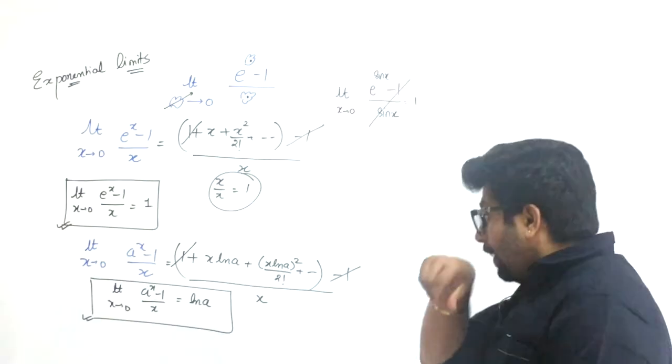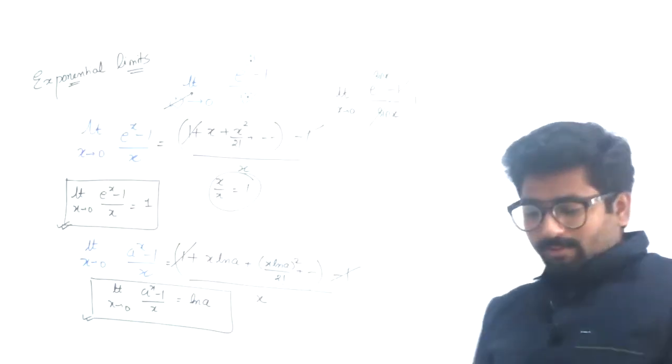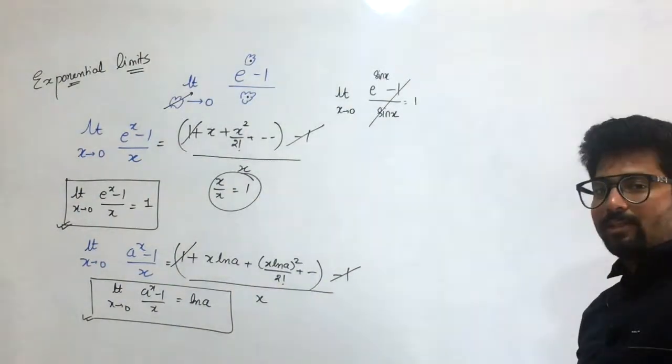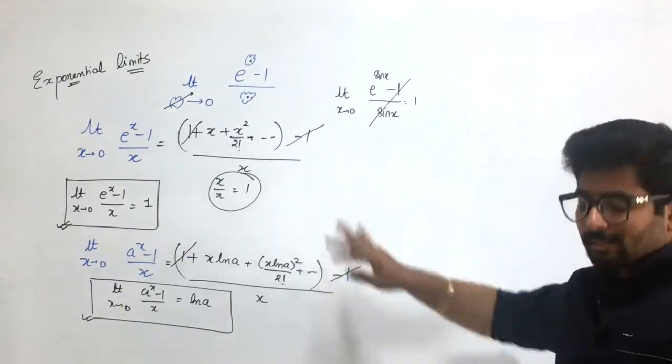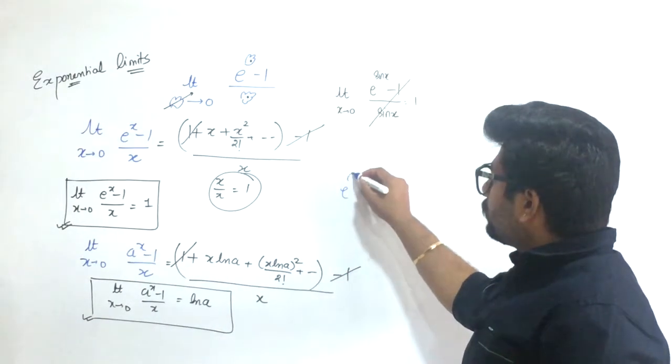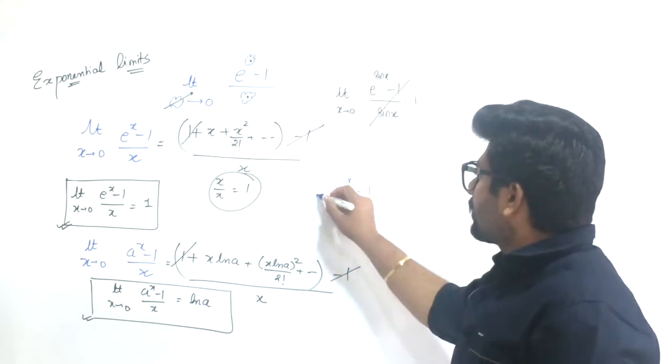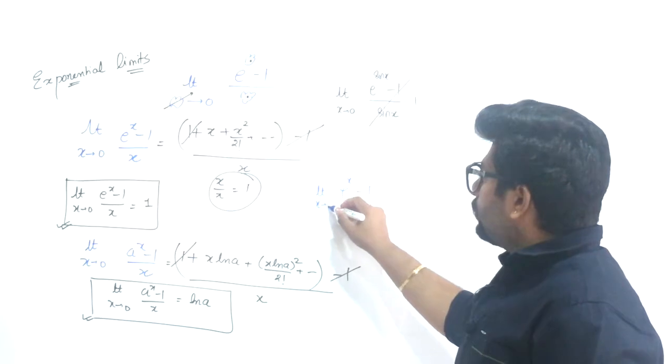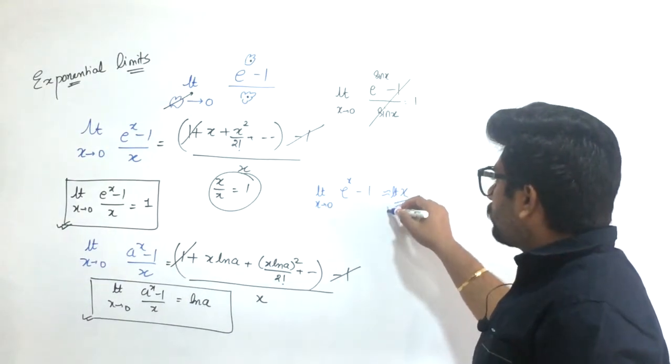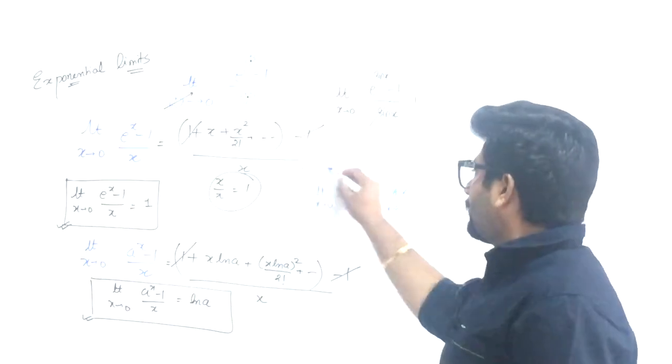I'll also teach you a shortcut. When you see e to the power of something minus 1, and limit approaches 0, this is equivalent to just that something. For example, e raised to power x minus 1, when limit x approaches 0, I can replace this with x. This is the shortcut.